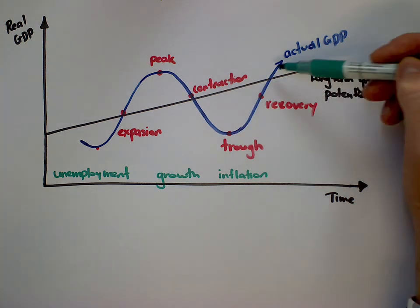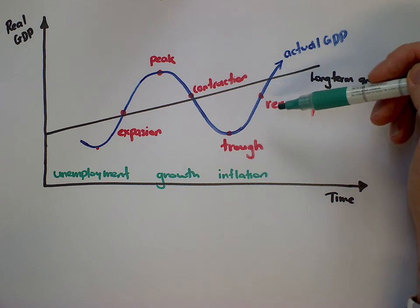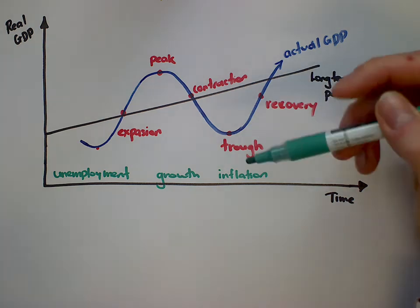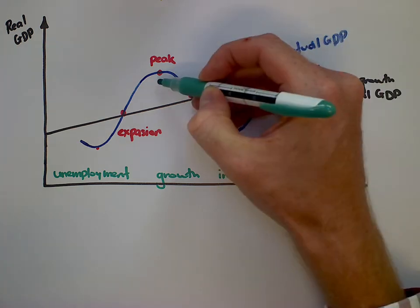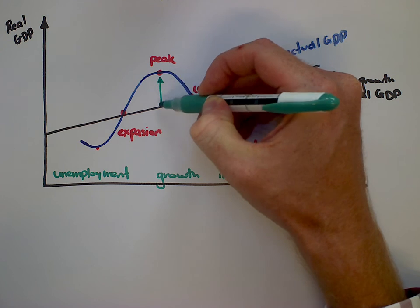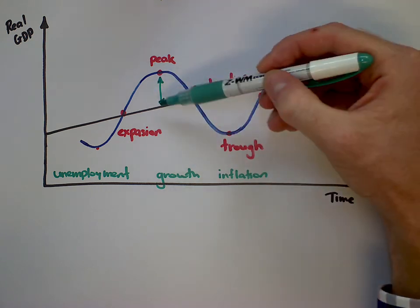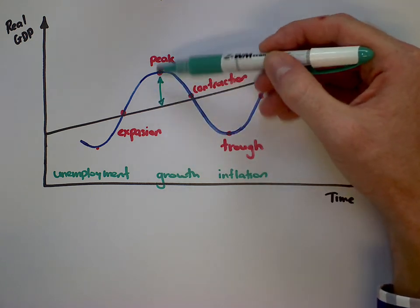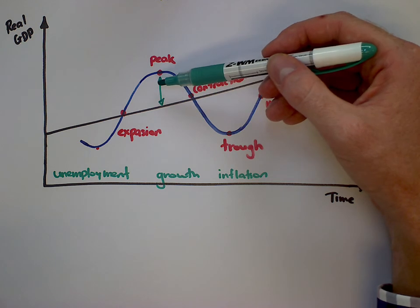And recovery is when unemployment starts to improve again. The way that I like to explain this as well is the reasons for this. So the reason that we increase over our potential is linking back to the idea of aggregate demand and aggregate supply.